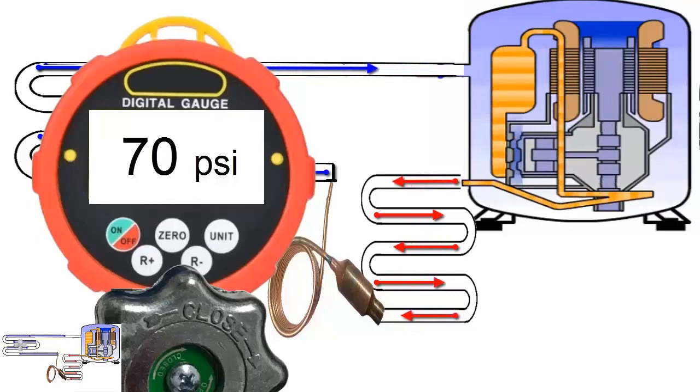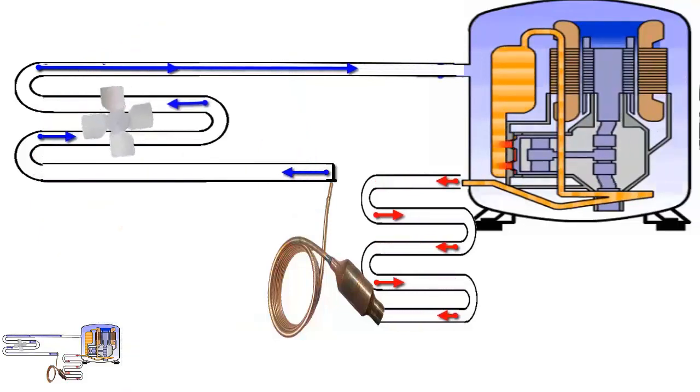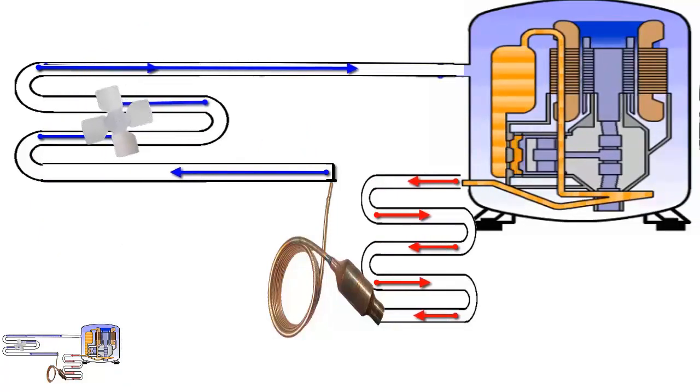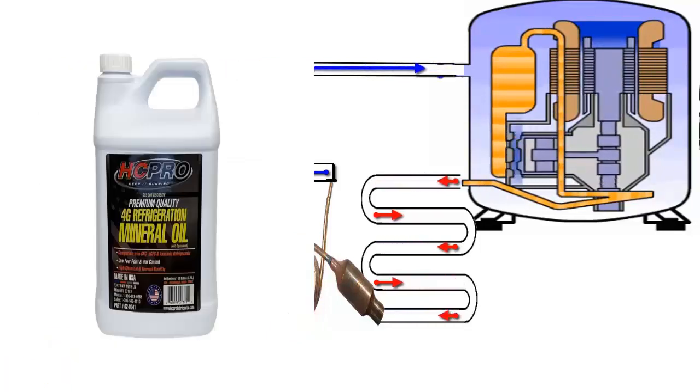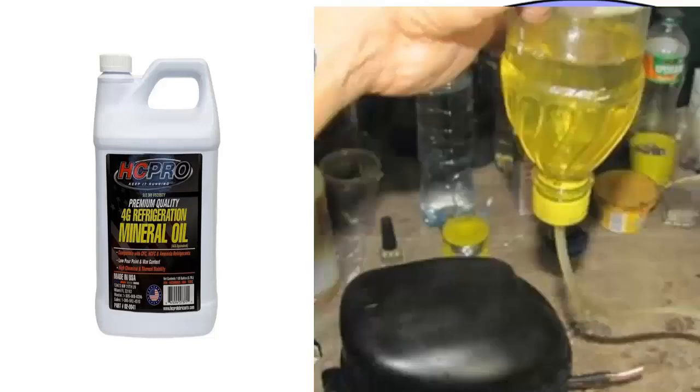R600A generally has very good miscibility with any type of lubricant. Due to the good solubility between mineral oils and these refrigerants, there are systems where it may be necessary to use oils of higher viscosity to compensate for this excess solubility.